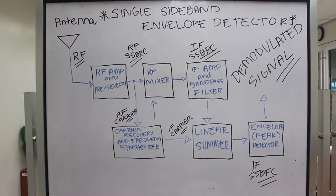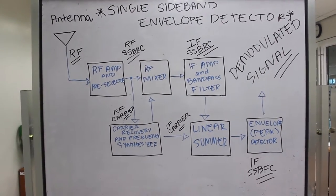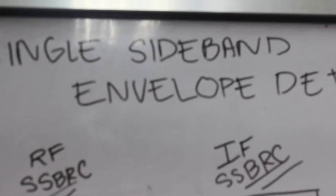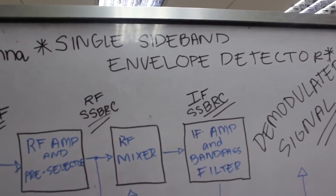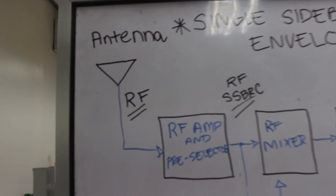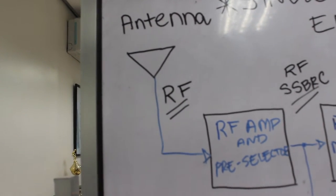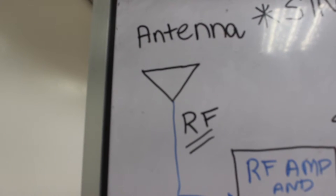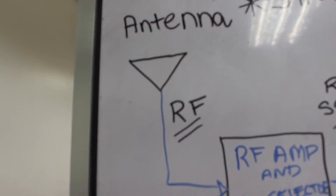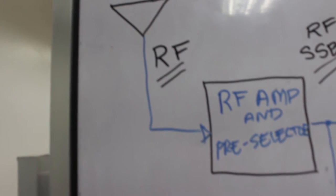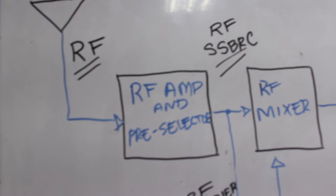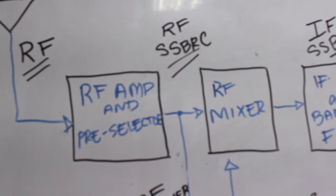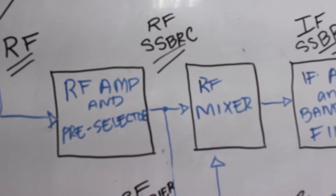The figure shows a single sideband envelope detection receiver. The signal is received through the antenna. The RF amplifier and pre-selector is used to detect RF signals, to limit the bandwidth and to amplify the input signal. The RF input signal becomes a single sideband reduced carrier.